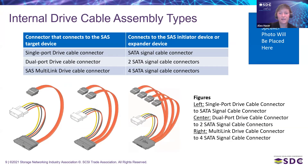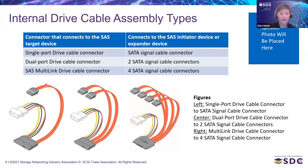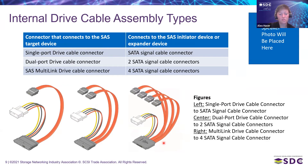Here we have a couple of different examples of internal drive cable assemblies. First, on the left, we have a single-port drive to a SATA signal, with the power connector shown. We also have a dual-port drive to two SATA connectors, again with just the one power connector. And finally, on the right, we have a multi-link, so a 4X connecting to four SATA signal connectors. This is how you would connect any of your drives in your SAS system.